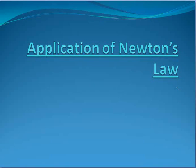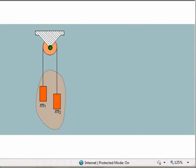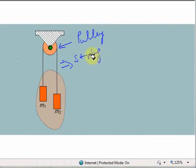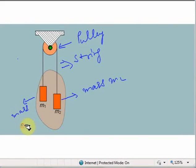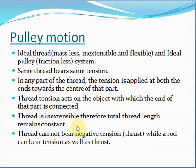We will start the chapter on Application of Newton's Law. First we'll see a typical pulley system and then discuss how we can apply Newton's law in a pulley system. You can see a pulley here around which a string is attached. On both ends of the string there are some masses — this is mass M2 and this is mass M1. This is our typical pulley system.